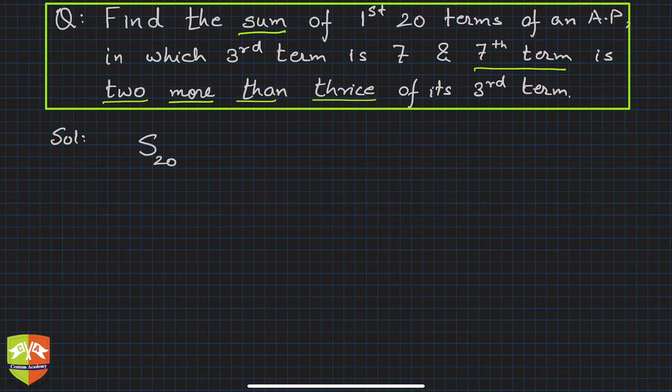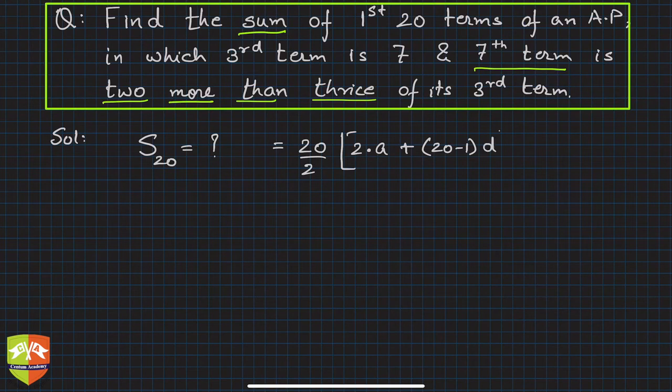So we have to find S_20. S_20 will be equal to 20/2, within brackets: twice the first term plus (20-1) times d. So we have to basically find out a and d, which will be found using the given conditions.